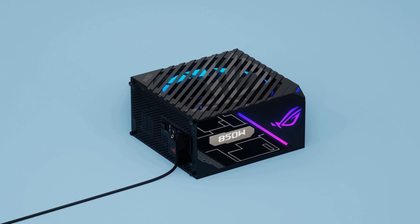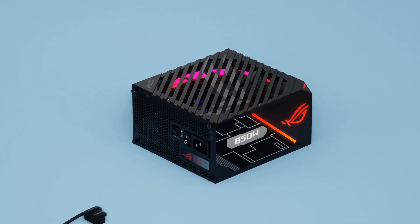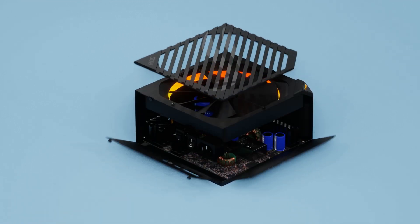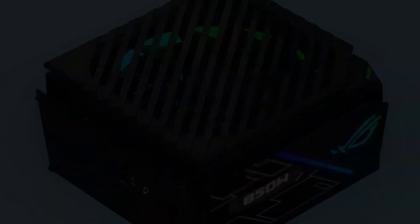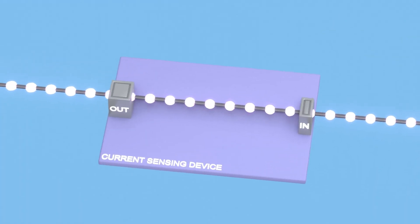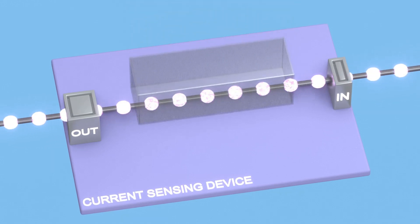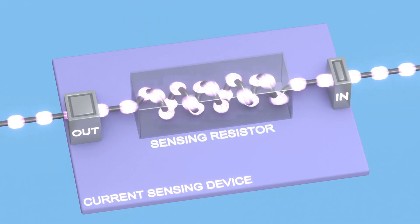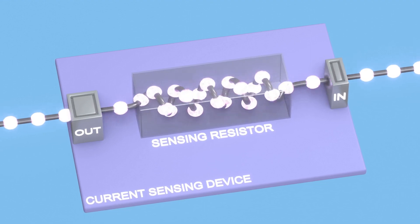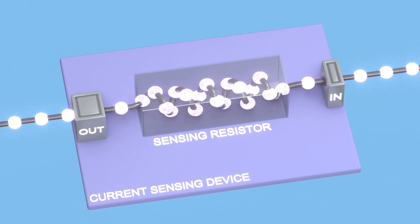Modern power supplies utilize MOSFETs as current sensing devices to protect both the power supply and the load. Let us understand the working of the current sensing device. To achieve this, we insert a small value resistor known as a sensor resistor into the current path. This sensor resistor will experience a voltage drop across it.